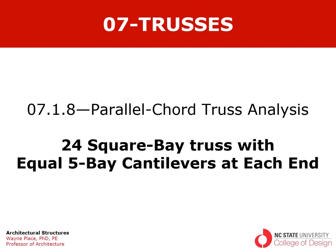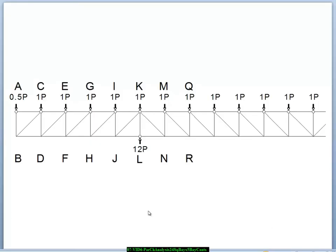Welcome back to our ongoing series of videos on the analysis of parallel chord trusses. This particular video is based on Chapter 7, Section 1, Subsection 8, in which we will focus on the analysis of a 24-bay truss with equal 5-bay cantilevers at each end. This first slide shows half of the truss. There's a support point here; this is the symmetry line of the truss, so we see this same thing mirrored on the other side. Here are the 5 cantilevered bays and then 7 of the 14 bays between the support points.